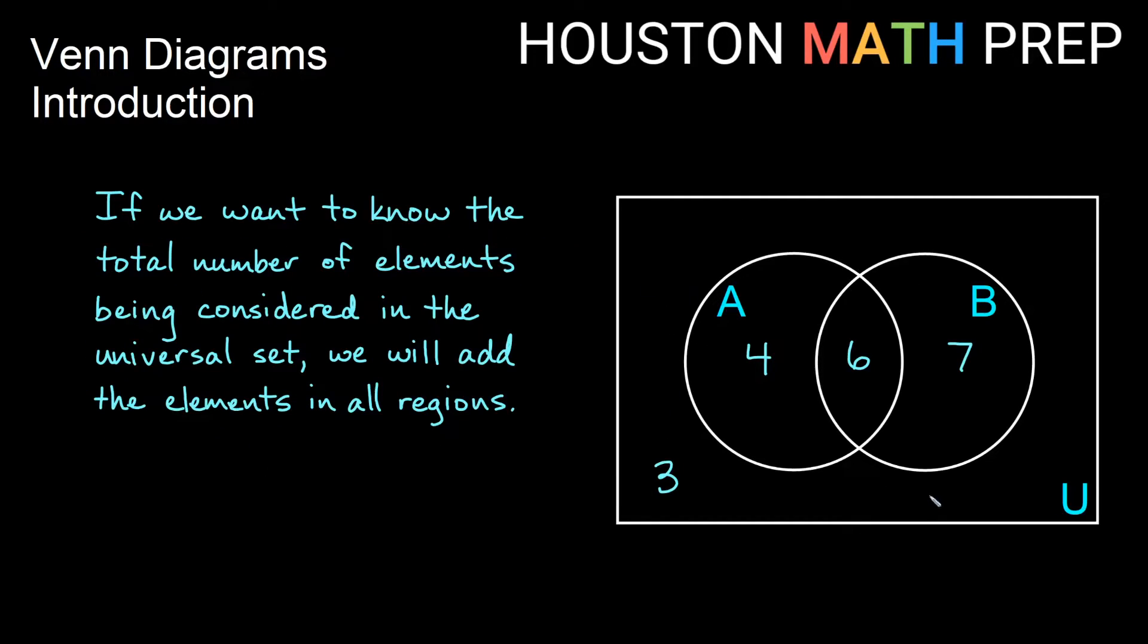If this was some sort of a survey or a list of data that we had and we wanted to know the total number of elements being considered in our universal set, we'll just need to add up the elements in each of the four regions here. So we would take four plus six plus seven plus three, and we would get the number of elements in the entire universal set is 20 elements.